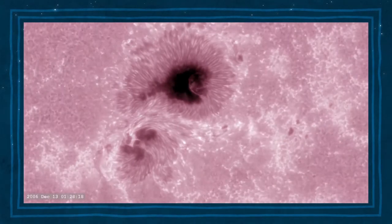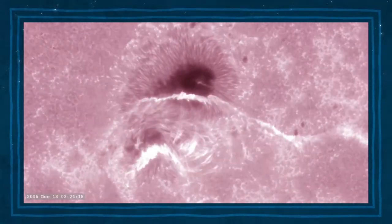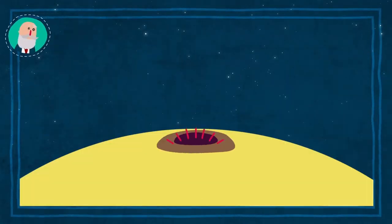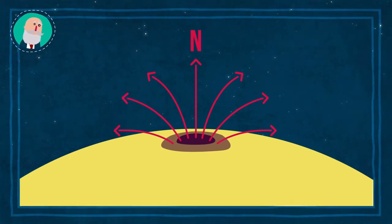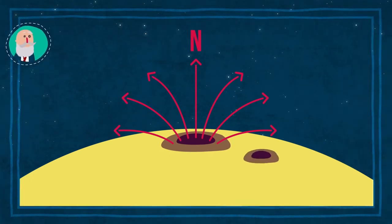Ese día, ocurrió una de las mayores fulguraciones solares conocidas. Como ya hemos visto en otros episodios, las manchas solares tienen campos magnéticos intensos.